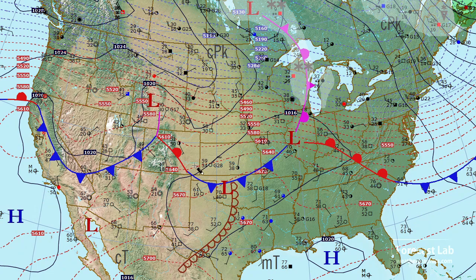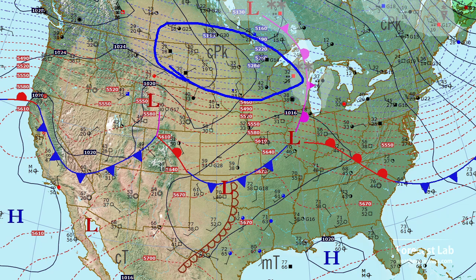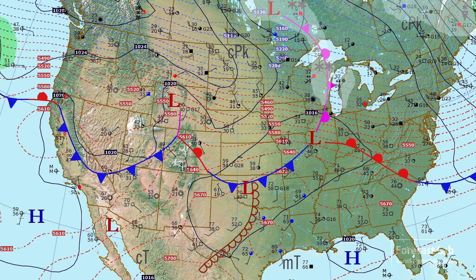Back to our surface map, we can see that the cold air coming south is not really all that cold — we're talking 30s in North Dakota, and that's what we should be seeing this time of year. Let's take a look out in the Pacific.